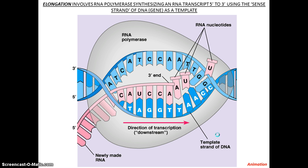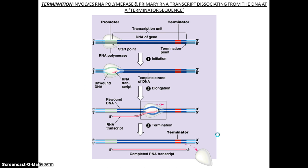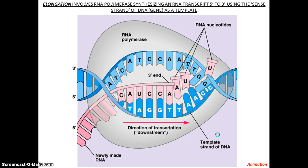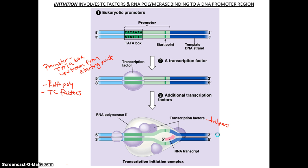A big difference in eukaryotes is that you have something called a TATA box in the promoter area, followed by the starting point. In eukaryotes, you have a promoter for each gene, whereas in prokaryotes, a promoter can be shared by several genes. Also, eukaryotes have transcription factors that help RNA polymerase bind to the promoter — something you don't see in prokaryotes.